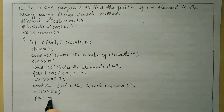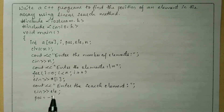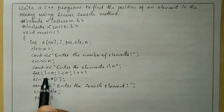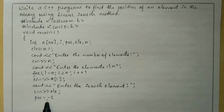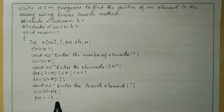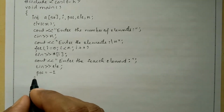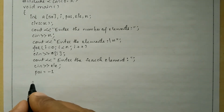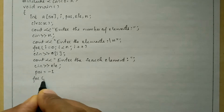Now I'm going to initialize the variable pos equal to minus one, which indicates a null position. Since array index numbers start from zero, we use minus one to indicate a null position. We will study why we initialize pos to minus one once we take an example. Now let us write the looping structure.